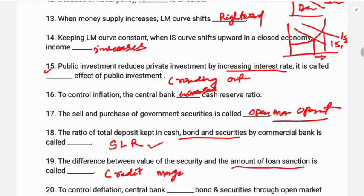Question twenty: to control deflation, the central bank purchases bonds and securities through open market operations.